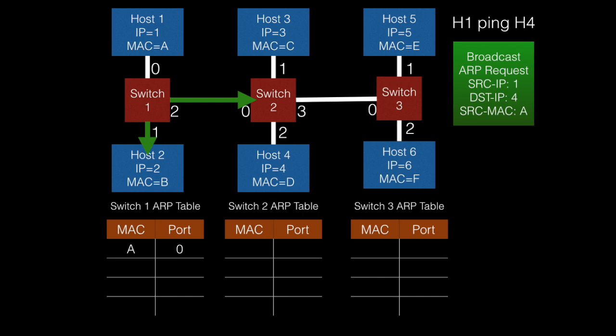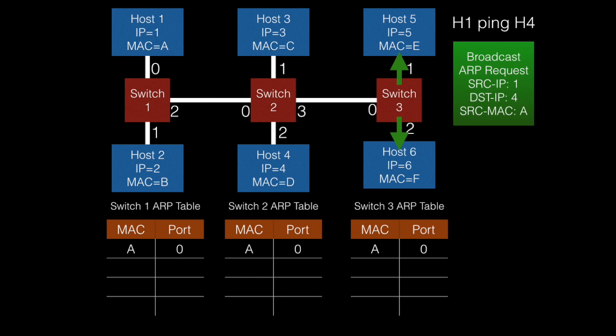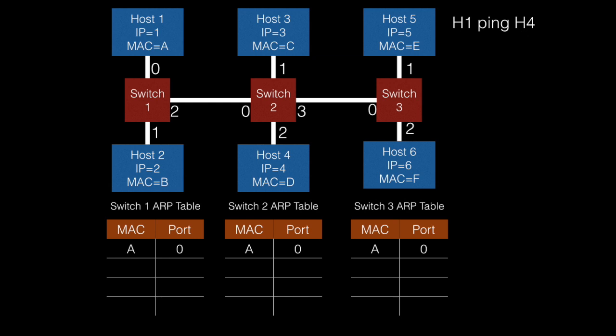Upon reaching switch2, it will do a very similar function. Since its ARP table is empty, it will update it to say that MAC address A is coming in on port 0, and since it does not know the destination, it will send this data out over ports 1, 2, and 3. Again, switch3 receives the data on port 0 and now has an association that MAC address A should always be sent on port 0. One thing to note is that each of the hosts that receives these messages will also be able to build its own ARP table, meaning host2 now knows the association between the IP address for host1 and its MAC address.